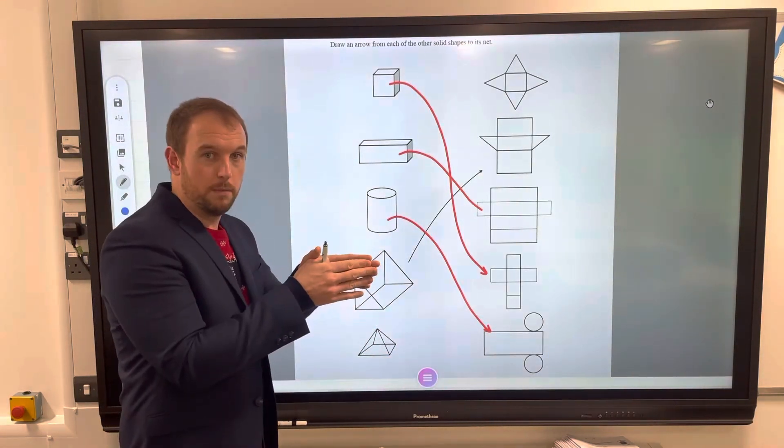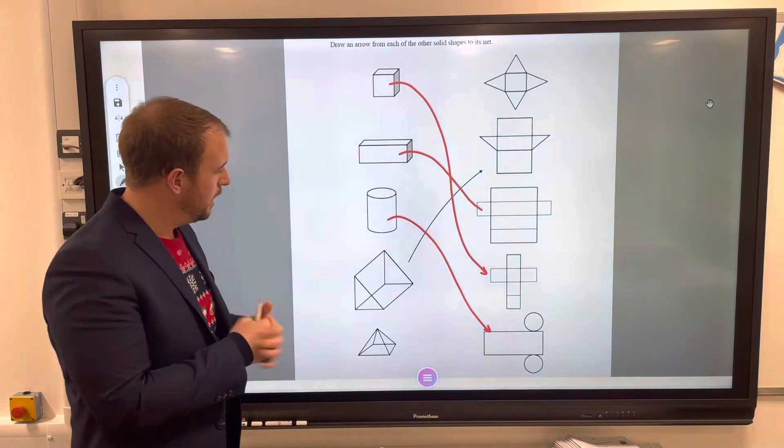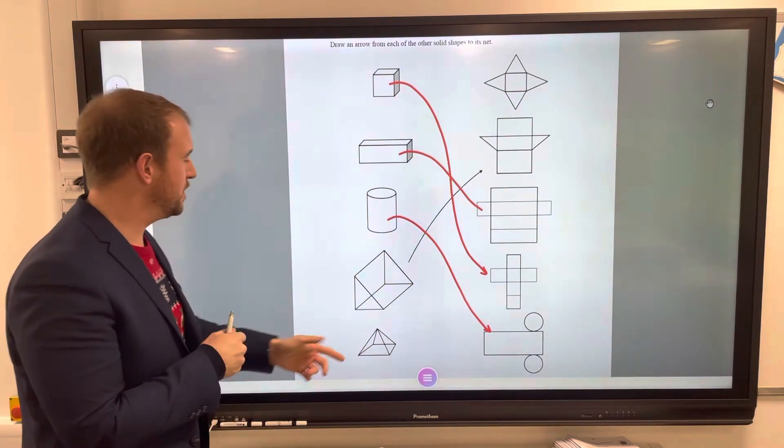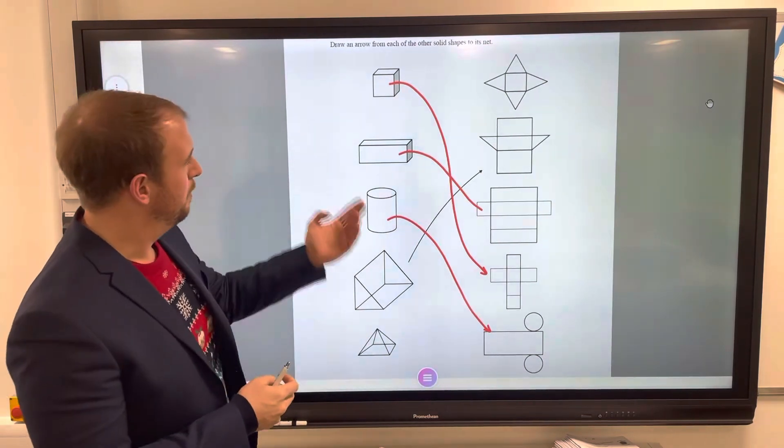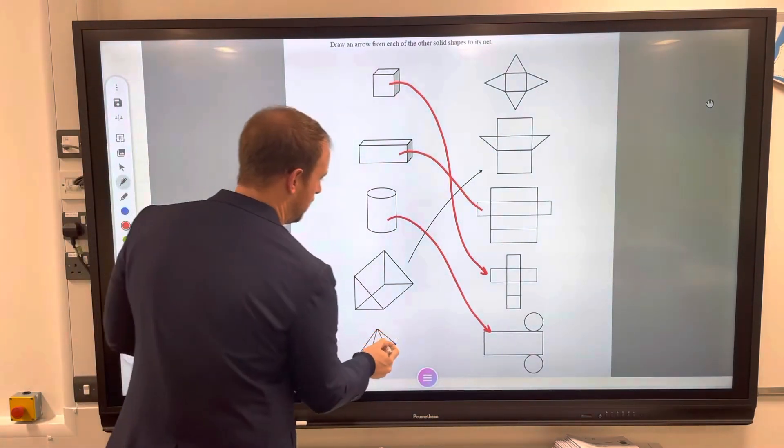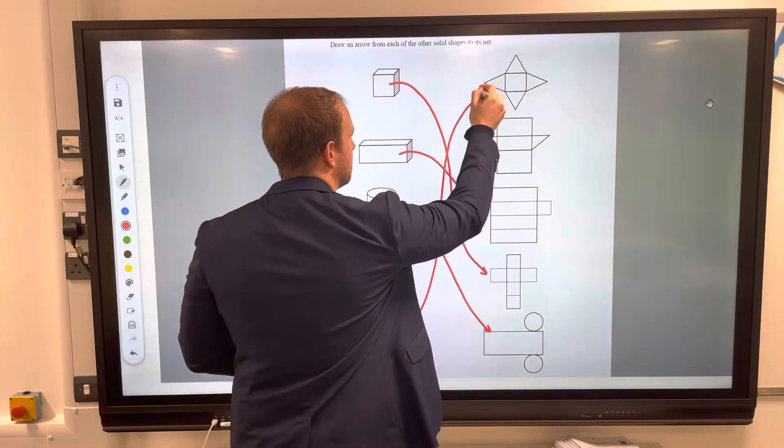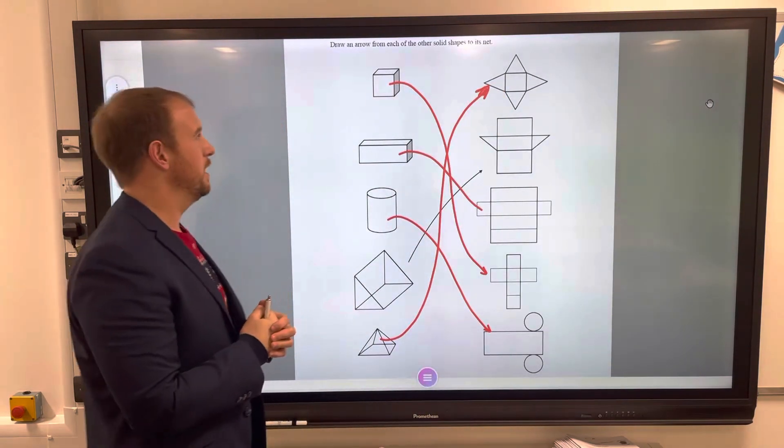Here we have a square based pyramid, so if it's square based it's going to have a square and it's going to have some triangles as well. Then you can see, process of elimination, you can see that has to match that one there. So let's go through those shapes again.